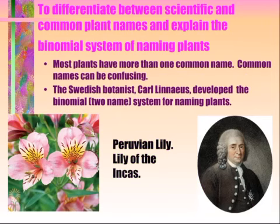The difference between scientific and common plant names is how the binomial system became a thing. Most plants have more than one common name, and that can become very confusing. For example, this flower is called an alstroemeria — that's the scientific name — but its common names include Peruvian lily or lily of the Incas. Using these common names can be very confusing because they could be used to describe other plants as well. A guy named Carl Linnaeus, a Swedish botanist, developed the binomial system for naming plants, which gives plants two names to identify it.